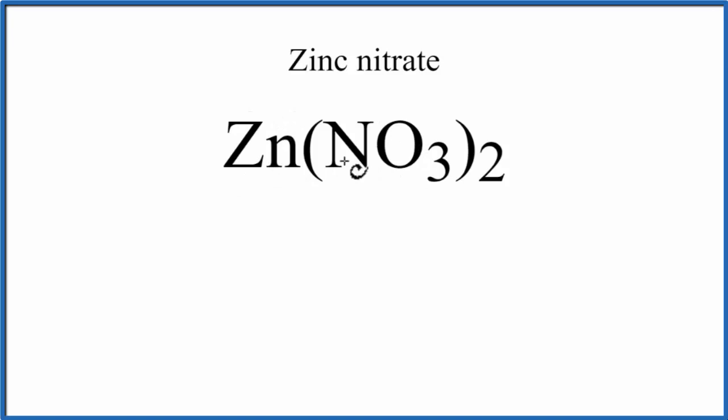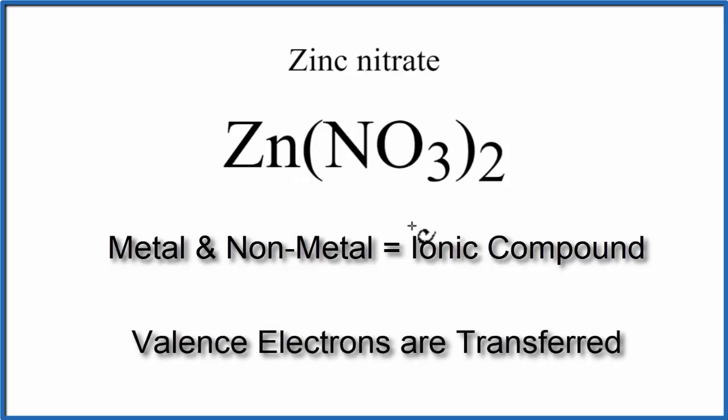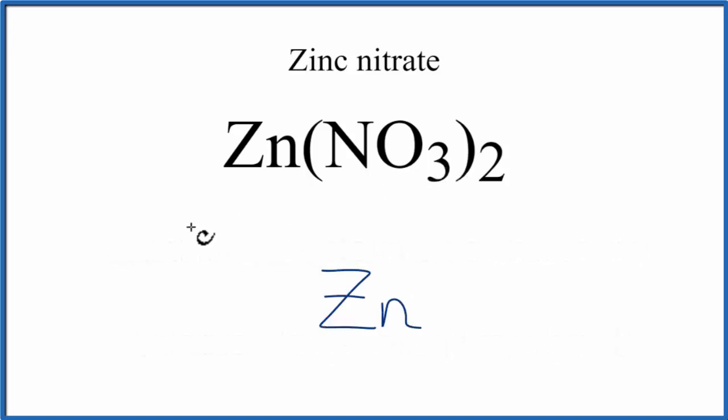So we have a metal and non-metals that makes this an ionic compound. Because it's ionic, the zinc, the metal, will transfer electrons to the polyatomic ion. So we'll write zinc, and then we'll put NO3 on either side.